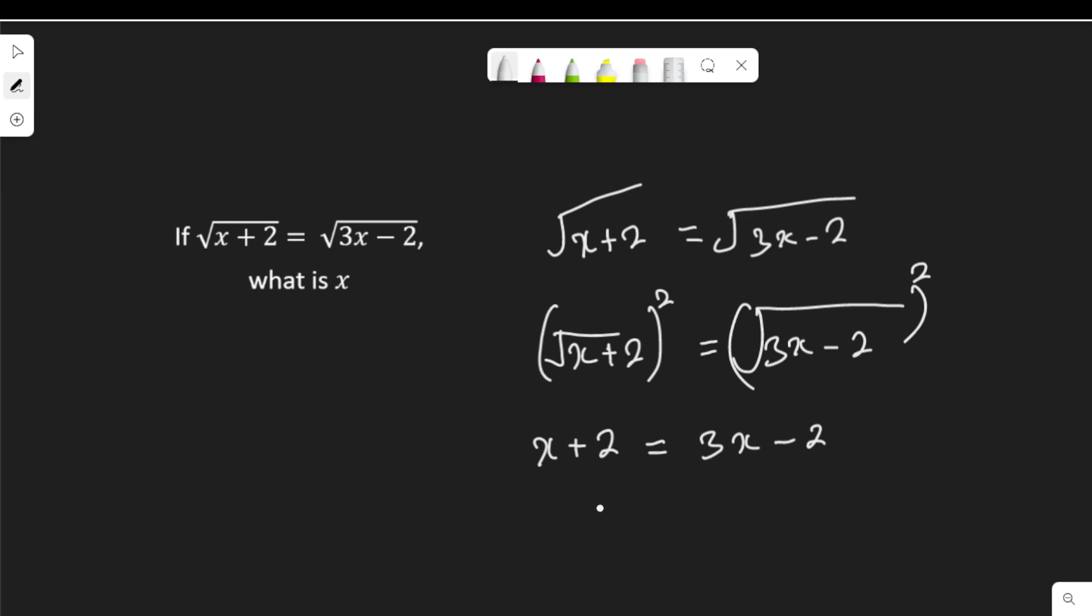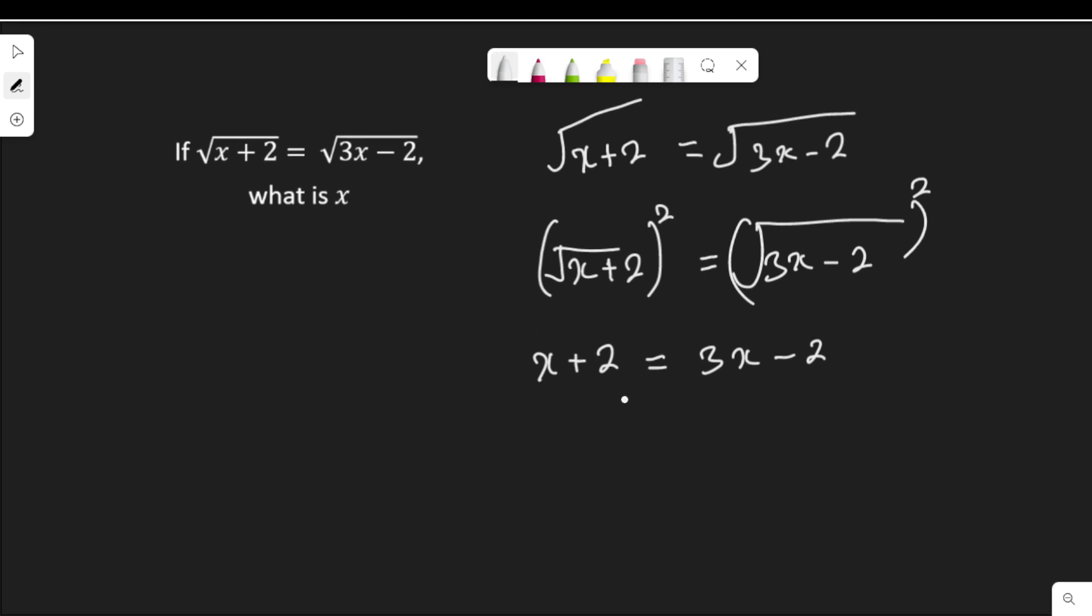Collecting like terms, bring this negative 2 to the other side so I have 2 plus 2 equal to 3x. Taking x to the other side becomes negative x. And 2 plus 2 is 4, while 3x minus x is 2x.